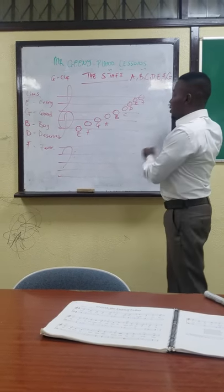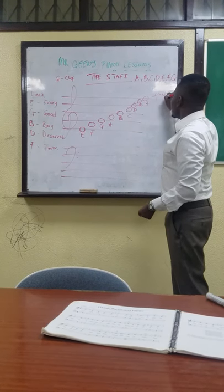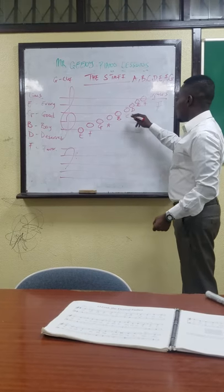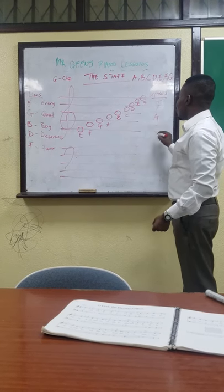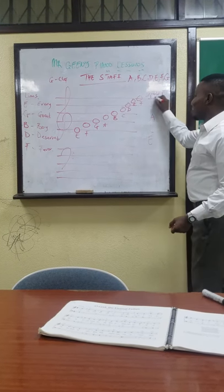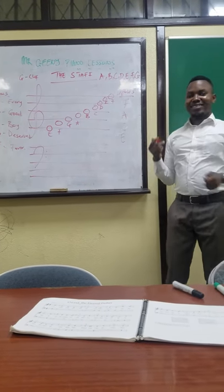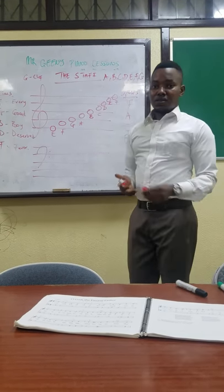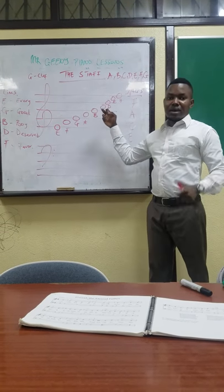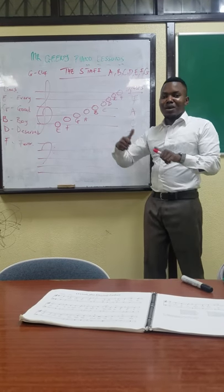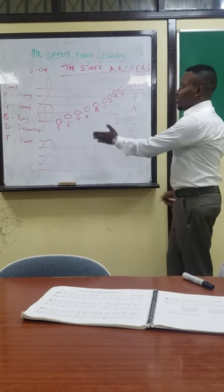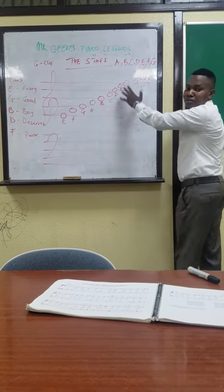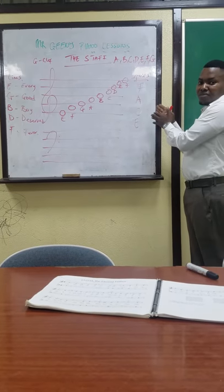Now let's bring out the spaces. The first space is F, the second space is A, the third space is C, and the fourth space is E. So the acronym is FACE. Any time you think of FACE, it should remind you of your treble staff spaces. This will come in very handy when we study practicals, because these names can be found on the keyboard and that is what you are going to use to play the piece.